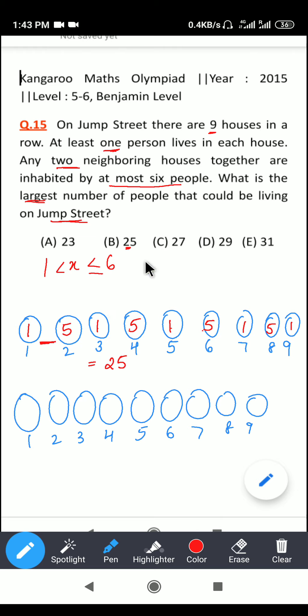So we have 25 here as an option, but we also need to see whether there could be more people that could be living in these houses.